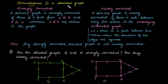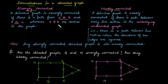Next is connectedness in a directed graph. There are two categories: one is called a strongly connected graph and another is called a weakly connected graph. A strongly connected graph means that in a directed graph, if there is a path from A to B, then there must be a path from B to A, where A and B are vertices of the graph. It means for any pair of vertices, if there is a path from the first to the second, there must also be a path back.